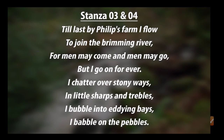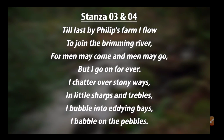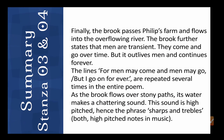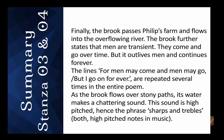The brook joins an overflowing river. Philip's farm is symbolized as a landmark of the ending journey of the brook. The last two lines carry the main theme of the poem — the brook is ever flowing, it is eternal without ceasing, whereas men are not forever. We are subject to decay, decline, and death. The brook is eternal.